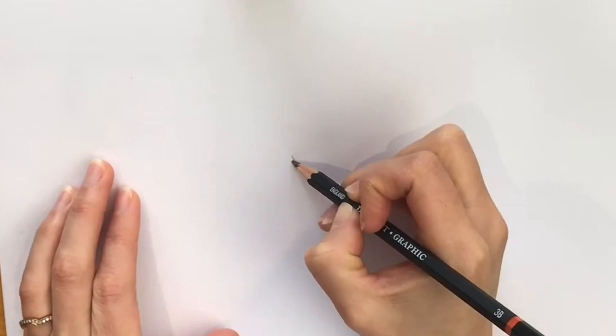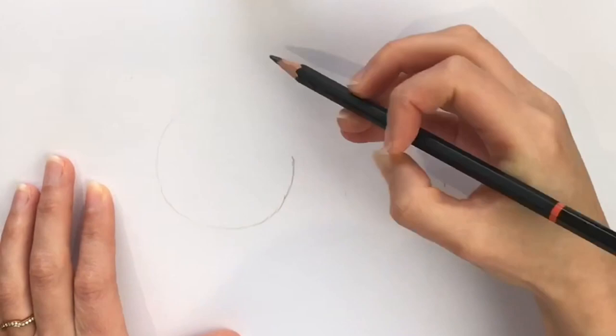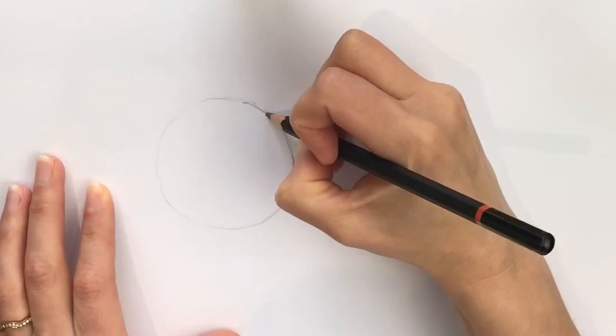We're going to start off with a series of circles. So the first one is going to be quite a large circle. Now if you want to draw around something, please do. I'm just going to do a series of feathery pencil strokes just going all the way around, and then I'll go around a little bit darker. You can keep it very light because this is going to just show you where the front legs are going to go.